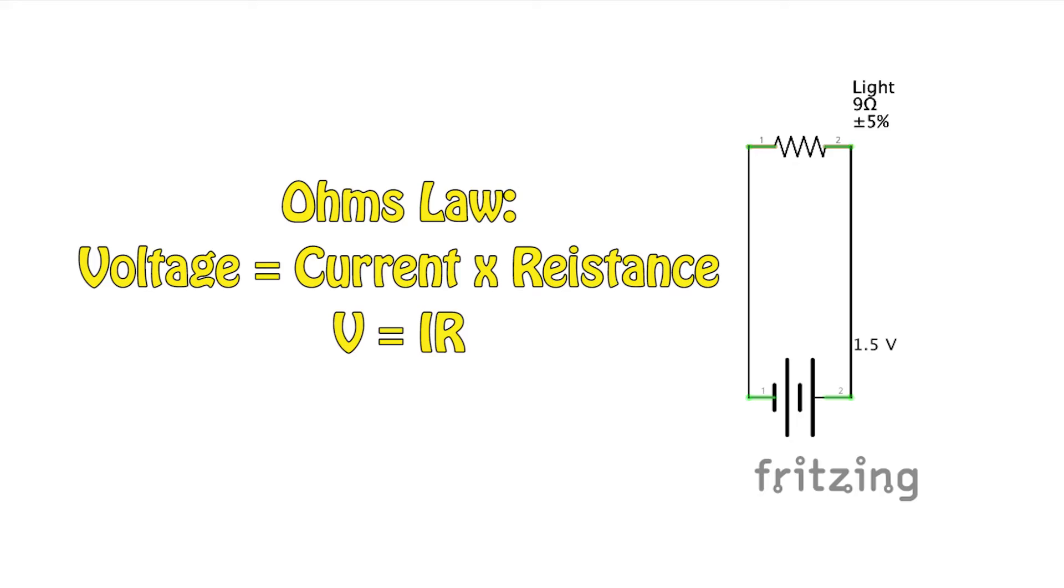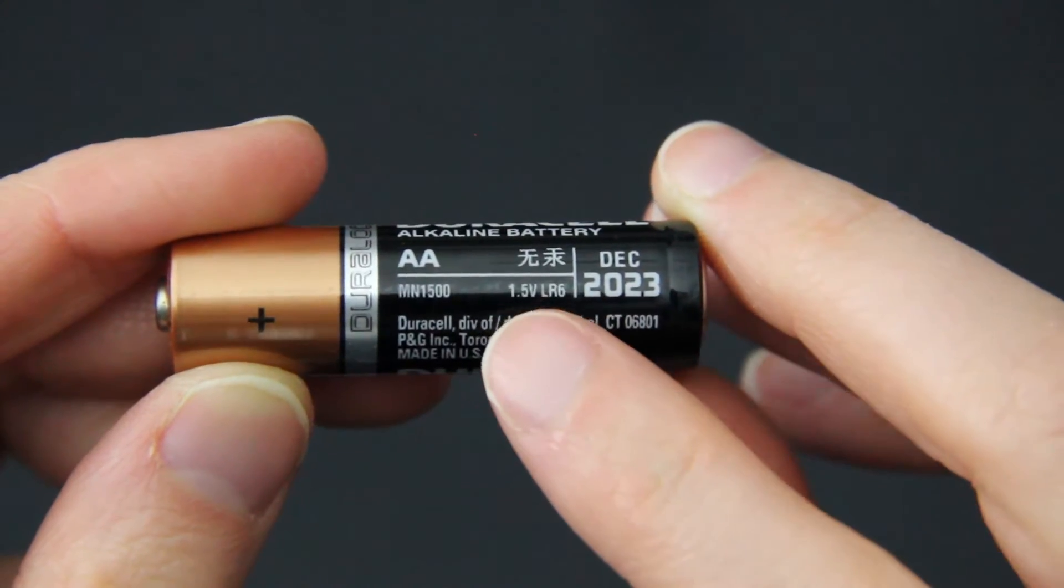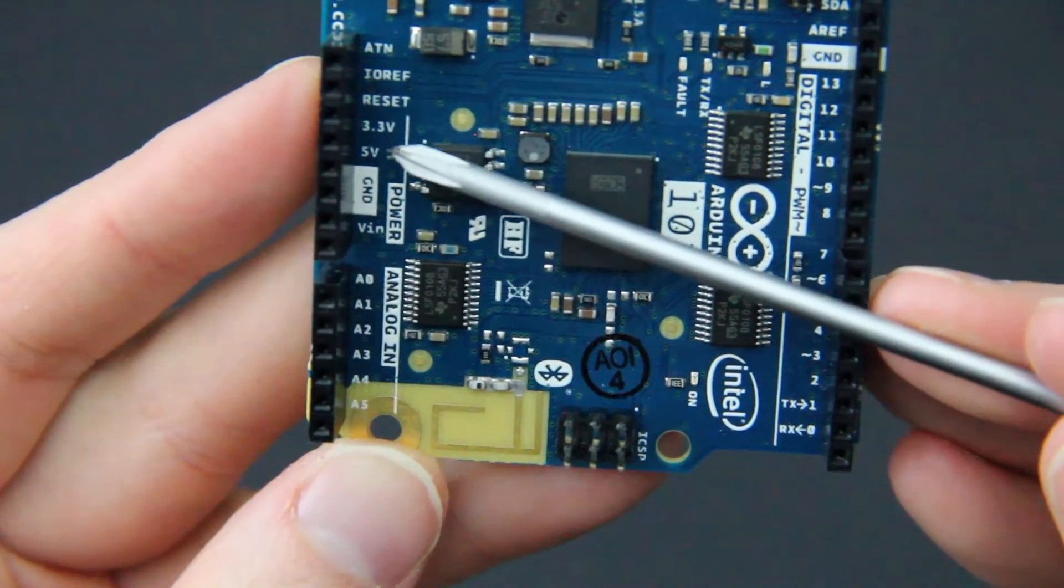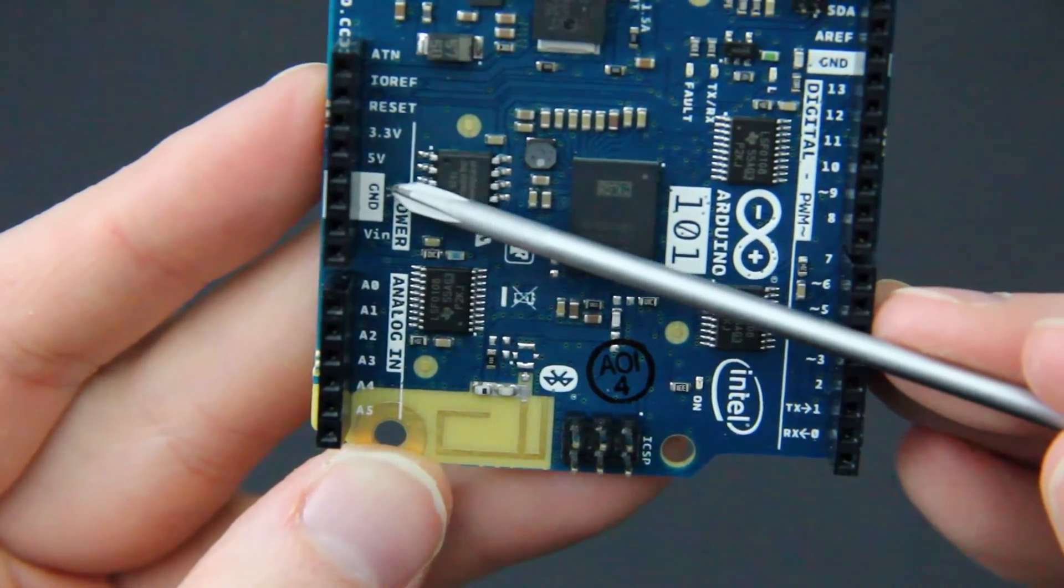Typically, the voltage for an overall circuit is a fixed number. These batteries provide about 1.5 volts each, and this one's a 9 volt battery. In our Arduino, we can pick from a 3.3 or a 5 volt source.